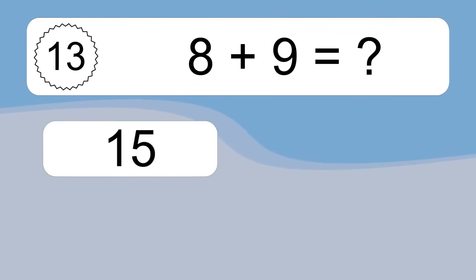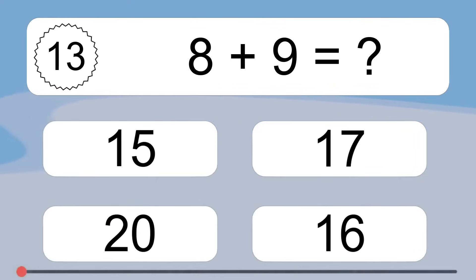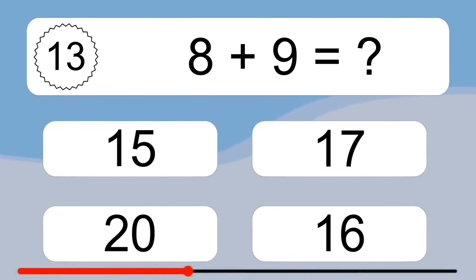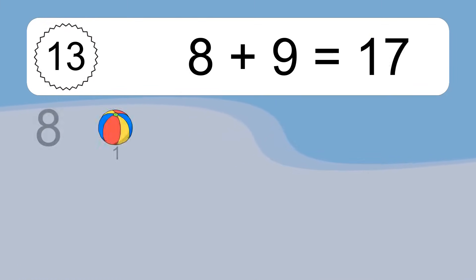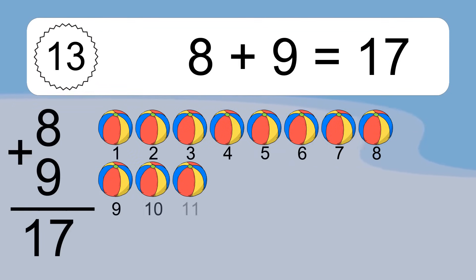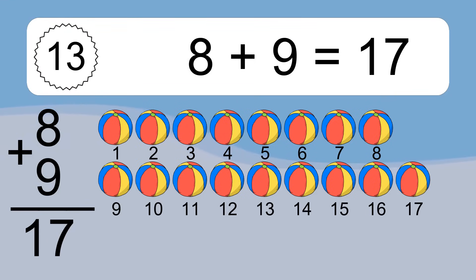8 plus 9 equals what? 8 plus 9 equals 17. Let's count it: 1, 2, 3, 4, 5, 6, 7, 8, 9, 10, 11, 12, 13, 14, 15, 16, 17.